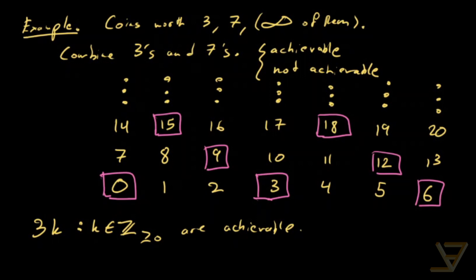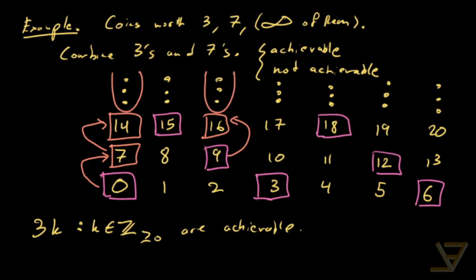Now what we're going to realize is that if we have, let's say, 0, and we add 7, then 7 is also achievable. And if we add another 7, then above that 14 is also achievable. If we have 9 and we add 7, then 16 is achievable. So everything above here is achievable, everything above here is achievable.